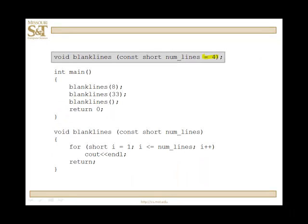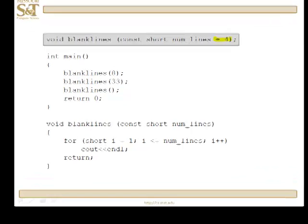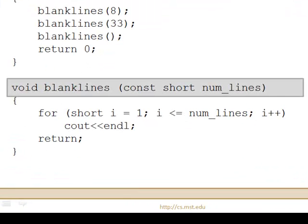And what that means is when you call the function, you don't actually have to send an argument. If you don't send an argument, then that parameter is assigned this default value. Notice that you only do this in the prototype. It does not appear in the definition of the function. It's not here.